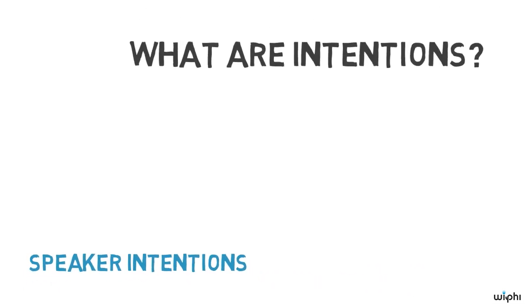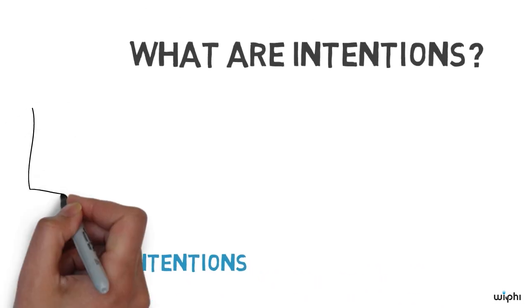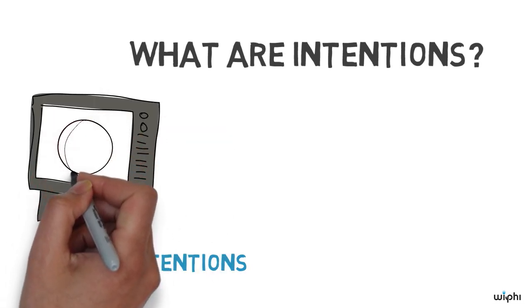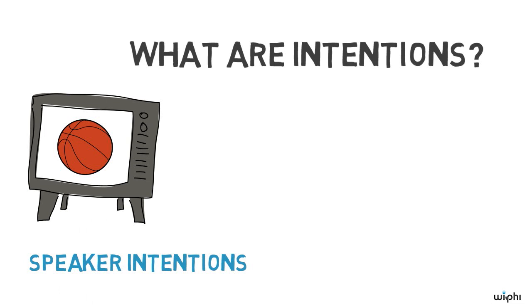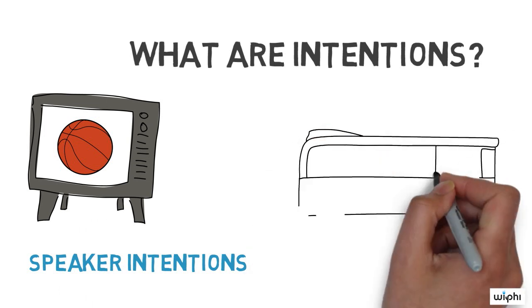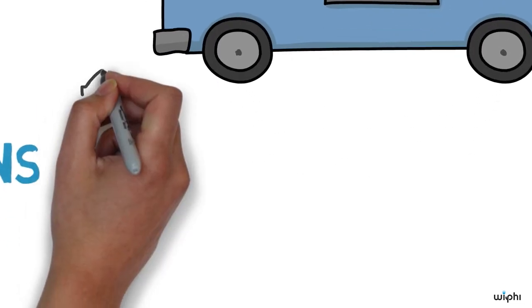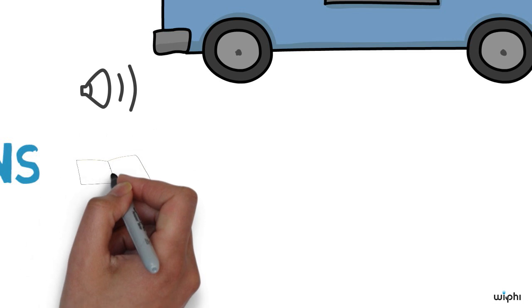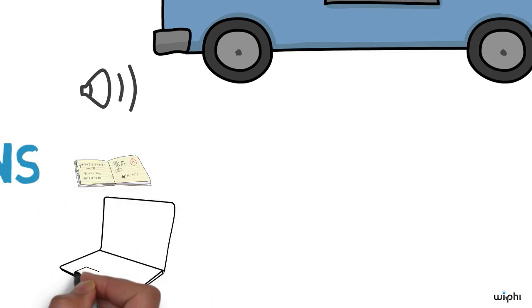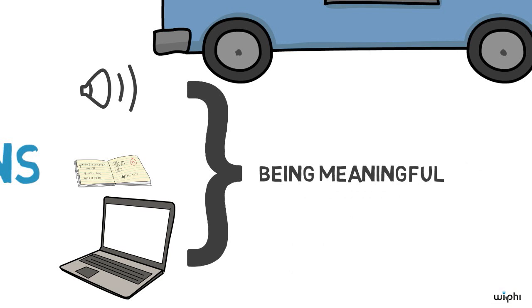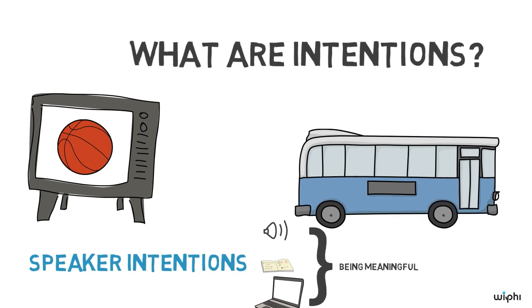What are intentions? Intentions are purposes or goals we have in acting. For example, you might turn on your TV with the intention of watching a basketball game. I might walk out of my house with the intention of taking the bus to work. Grice argued that intentions of a specific sort can account for certain sounds and marks on a page or computer screen being meaningful. He developed a theory on which a sentence has a particular meaning given a speaker's or writer's intentions.